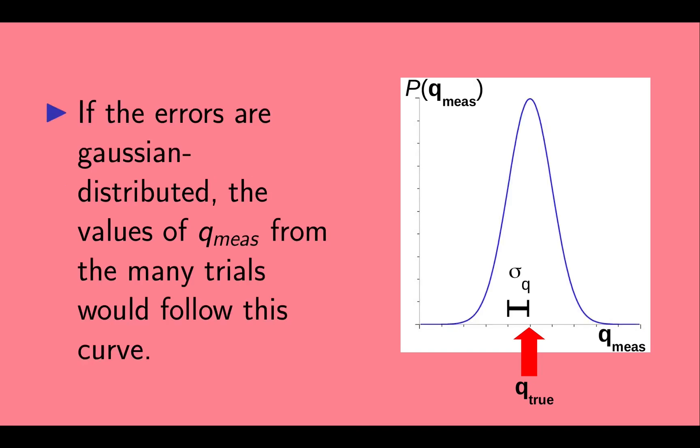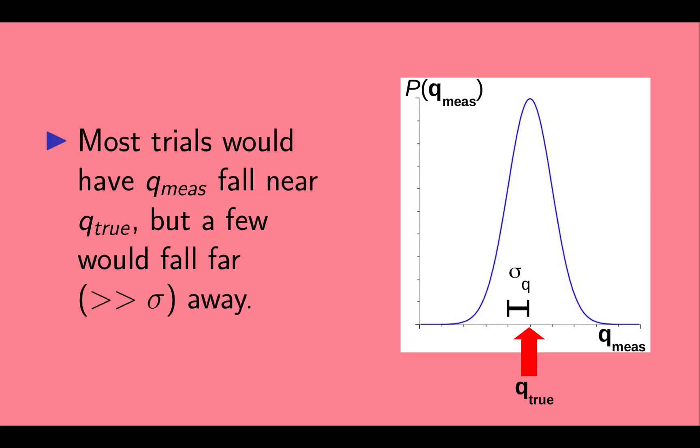If the errors are Gaussian distributed, or Gaussian for short, the values of q measured from many trials would follow this curve. Most trials would have q measured fall near q true, but a few would fall far away, where far away means much greater than one sigma away. Here we have labeled sigma as sigma q on the plot, just to emphasize that it is the width of the Gaussian for this particular quantity q that we're measuring.